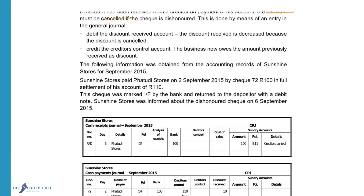We will debit the discount received account because discount received is an income that has a credit balance, so we want to decrease this income when we cancel the discount. We will credit the creditor's control account because we now owe the money to the creditors and we have to increase our creditors on the credit side.